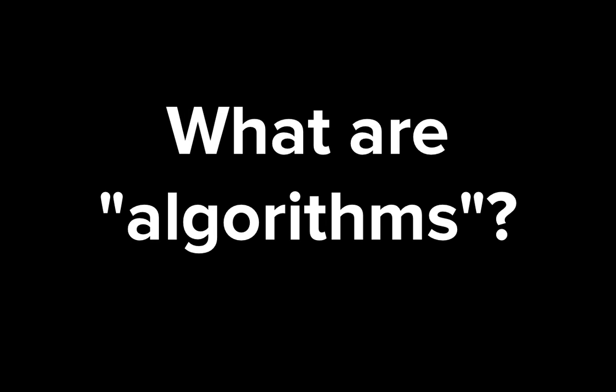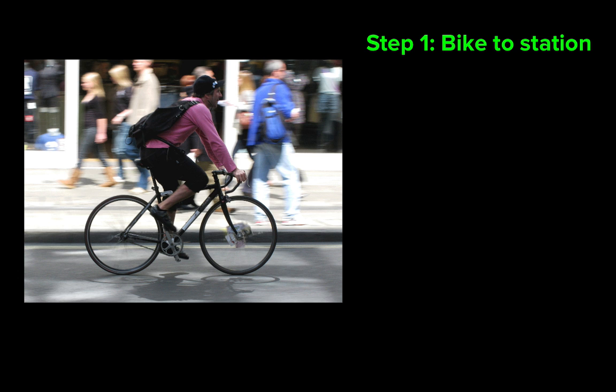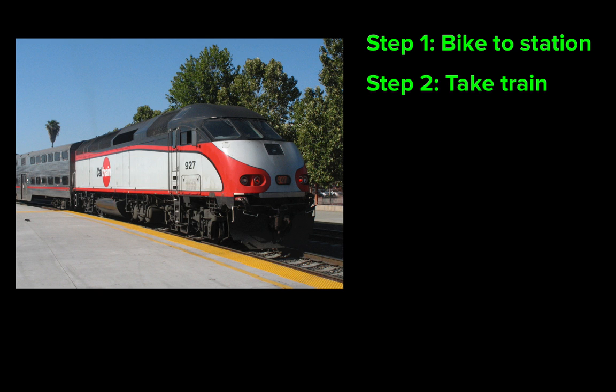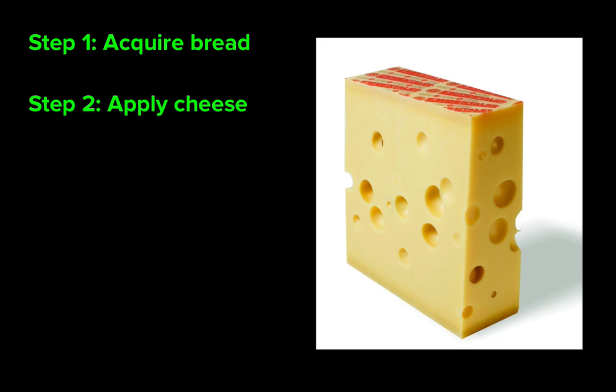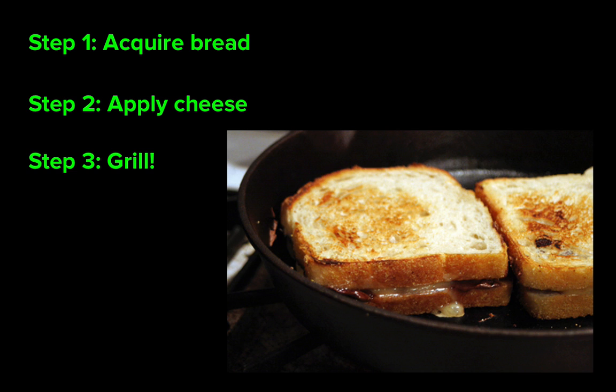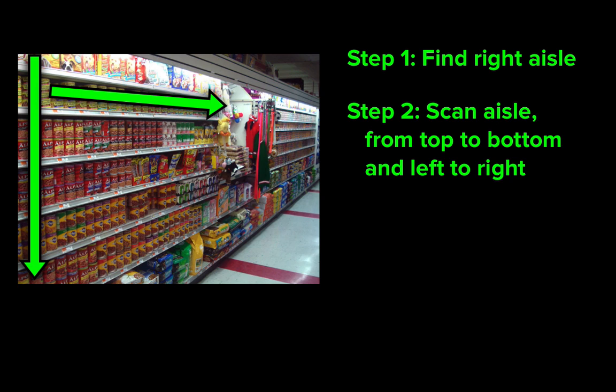What is an algorithm? A broad answer might be a set of steps to accomplish a task. You might have an algorithm for getting from home to school, for making a grilled cheese sandwich, or for finding what you're looking for in the grocery store.